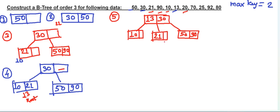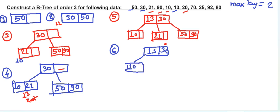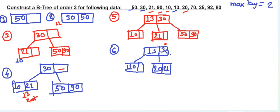Next comes 20. We need to maintain ascending order. So 20 is added to the right of 13, giving us 20 and 21 in that node. The root has 13 and 30, and the right side still has 50 and 90.